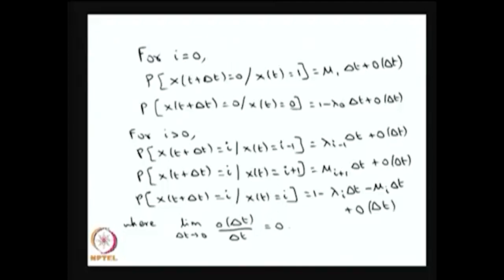Similarly, the probability the system stays in state 0 from time t to t + delta t is 1 minus λ₀ times delta t plus order of delta t. These μᵢ's and λ₀ and so on are always going to be greater than or equal to zero — strictly greater than zero also.